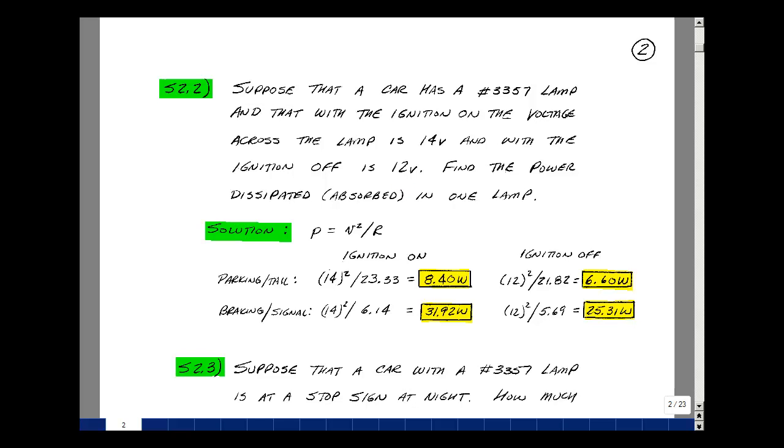We found in the previous Supplemental Problem that when you had 12 volts across the parking and taillight filament, the resistance was about 21.82 ohms. That gives me 6.6 watts.